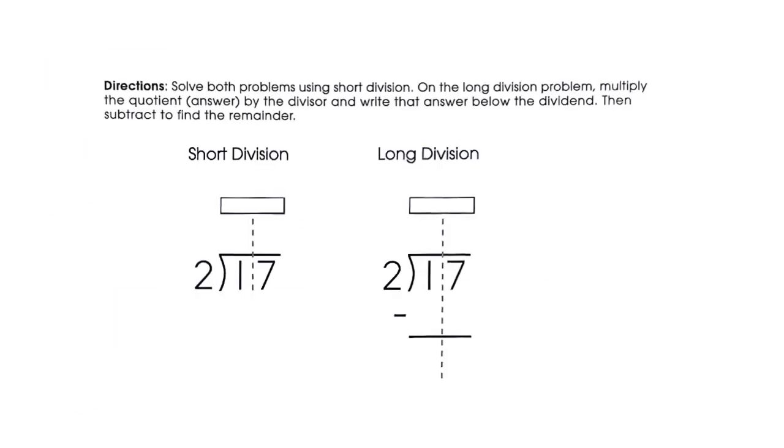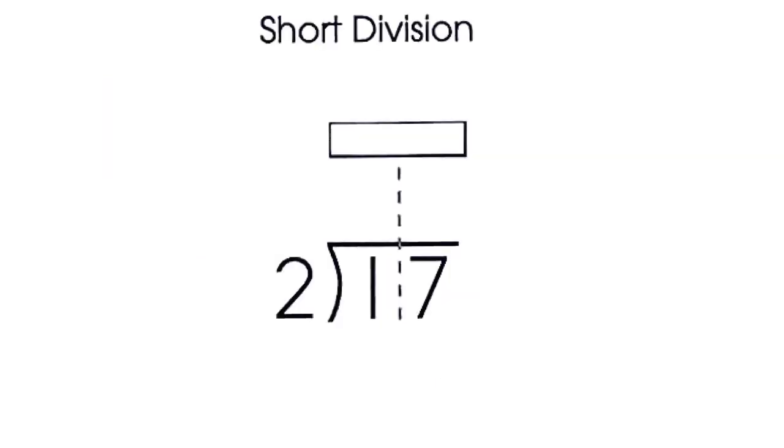Okay, let's read the directions. It says solve both problems using short division. On the long division problem, multiply the quotient answer by the divisor and write that answer below the dividend. Then subtract to find the remainder.